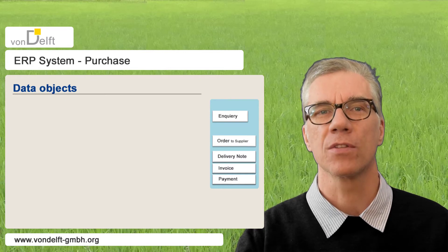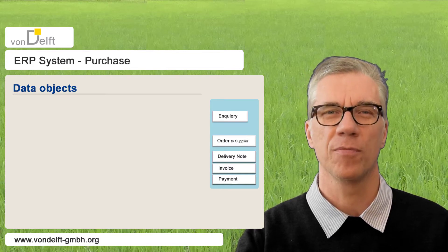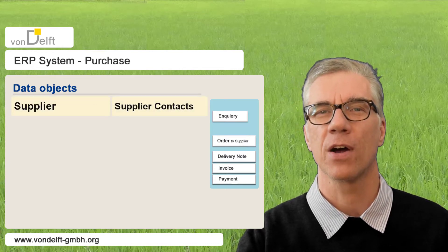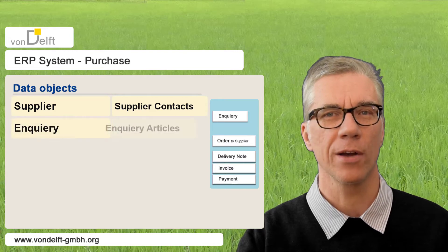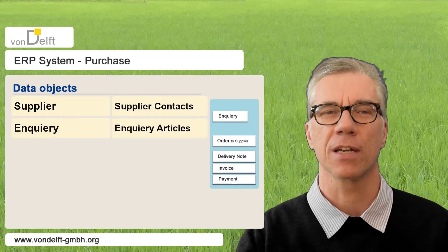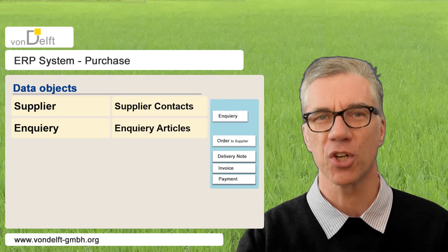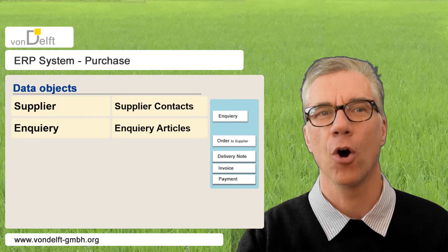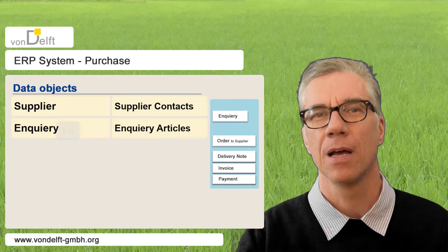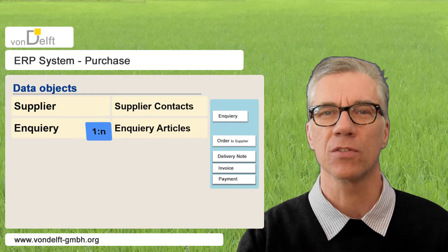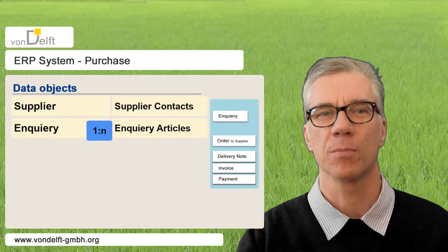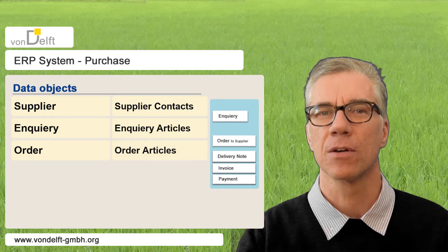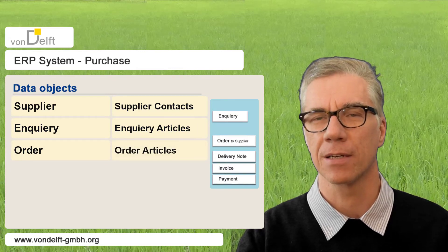Now to the data objects. We point out the main data objects in the area of purchase. There are suppliers and supplier contacts. There are inquiries and inquiry articles — the object inquiry articles is an extra object because in each inquiry there are possibly one or more inquiry articles, making a one-to-many relation between these two objects. We have order and order articles, with one or many order articles per order possible.